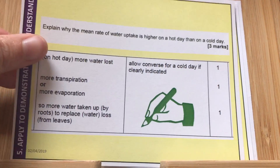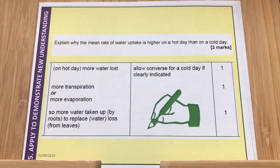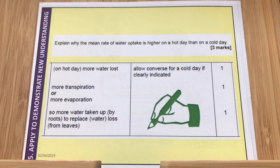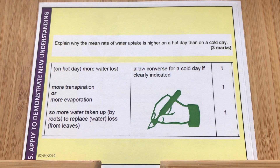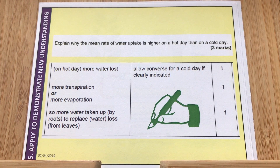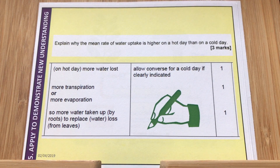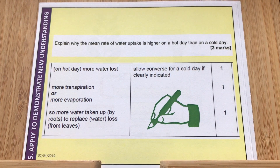Let's look at an exam question — quite a tricky one: explain why the mean rate of water uptake is higher on a hot day than a cold day. On a hot day we're losing more water out of the leaves via transpiration, evaporation, or evapotranspiration.